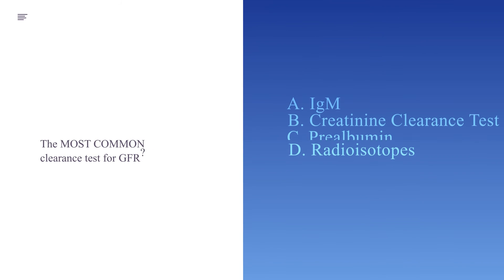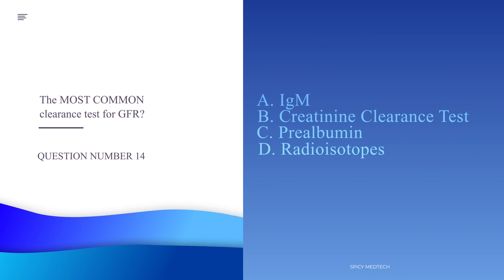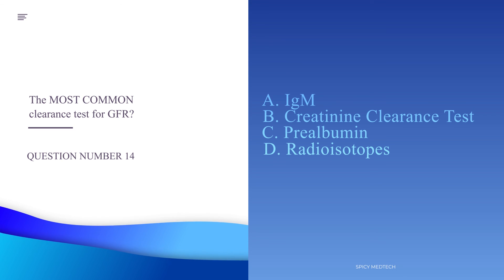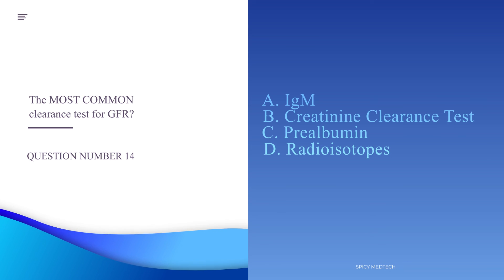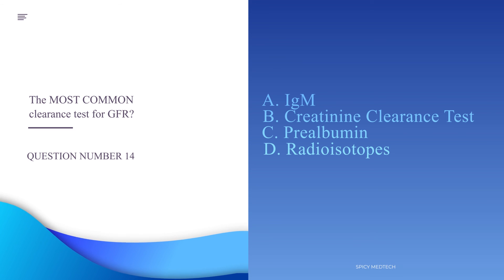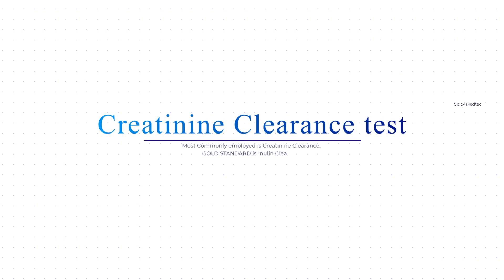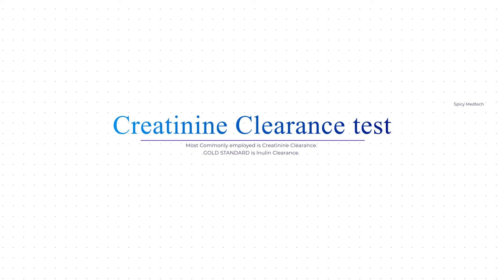Number fourteen: What is the most common clearance test for GFR? A. Inulin clearance test, B. Creatinine clearance test, C. Cystatin C, or D. Radioisotopes. The answer is letter B, creatinine clearance test, due to its simplistic and inexpensive nature. However, the gold standard for GFR determination is the inulin clearance test. Cystatin C is an indirect estimate of GFR, while radioisotopes are used to measure the viability of transplanted kidneys.